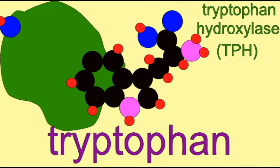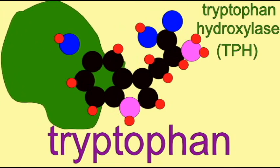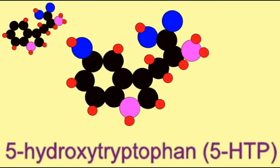tryptophan hydroxylase 2, which is only known in the brain, produced by enzymes of the dorsal raphe nucleus.